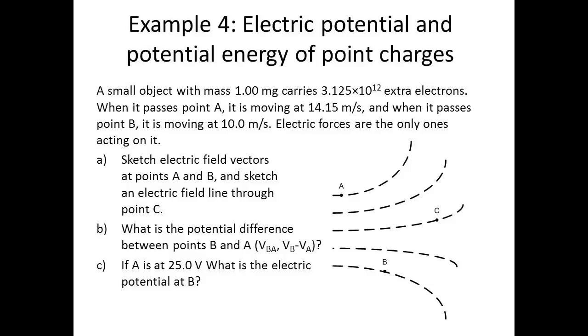Here's another example of electric potential and potential energy of point charges. A small object with a mass of 1 milligram carries 3.125 times 10 to the 12 extra electrons.